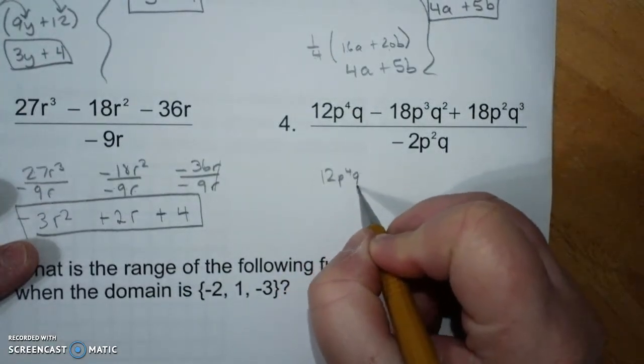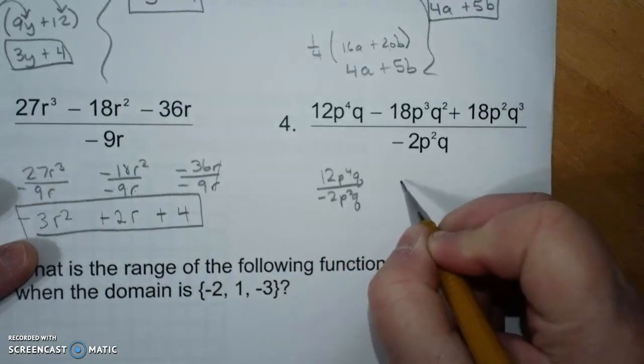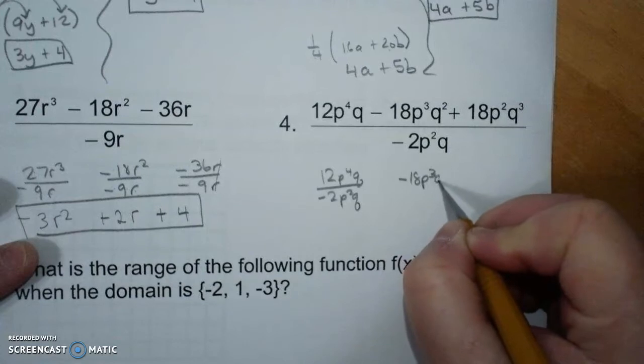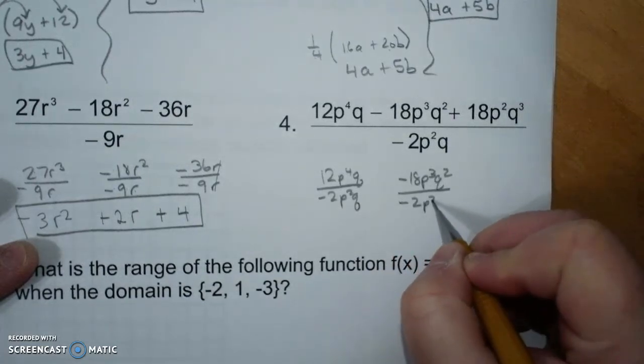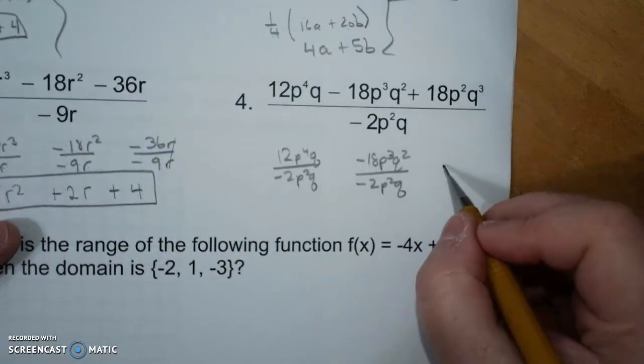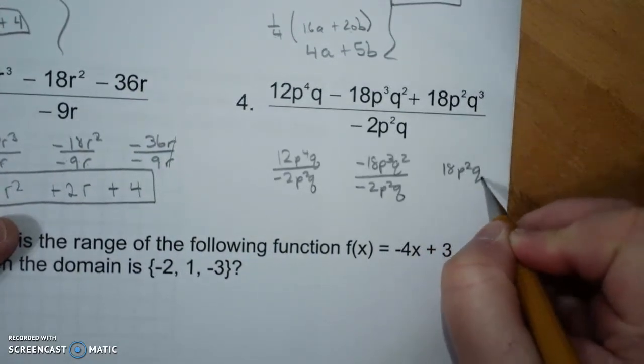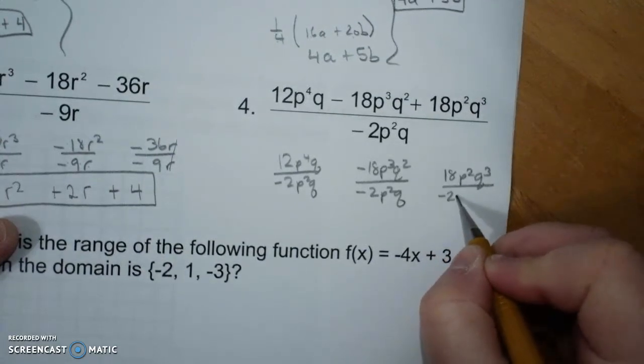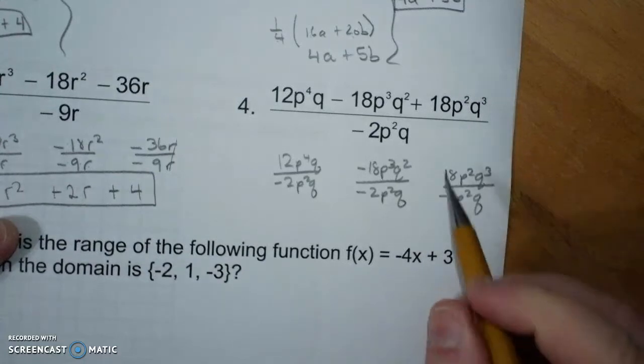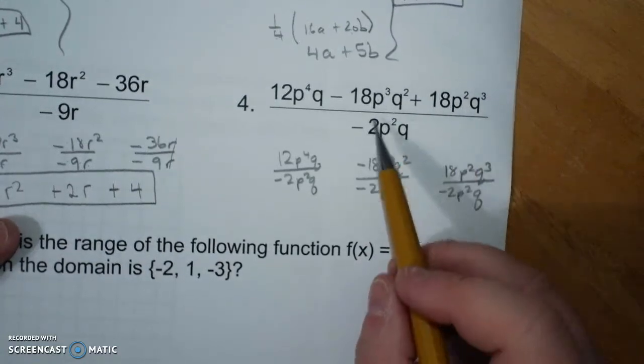12p to the 4th q over negative 2p squared q, minus 18p cubed q squared over negative 2p squared q.